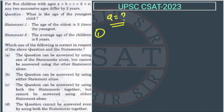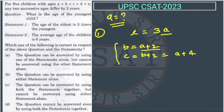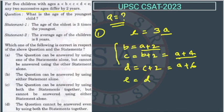Statement one says the age of the eldest, e, is three times the youngest. Now, from the condition that successive ages differ by two years, b is a plus two, c is b plus two so c equals a plus four, d is c plus two so d equals a plus six, and e is d plus two so e equals a plus eight.